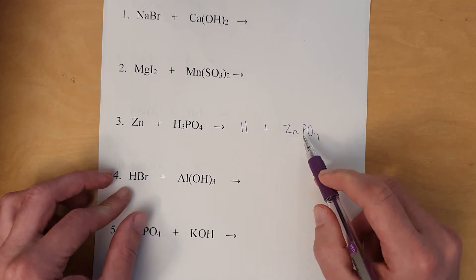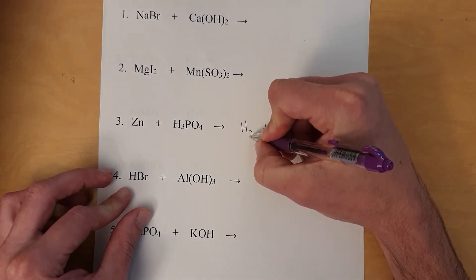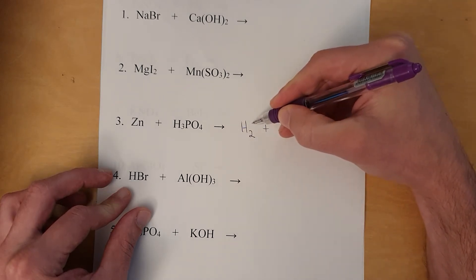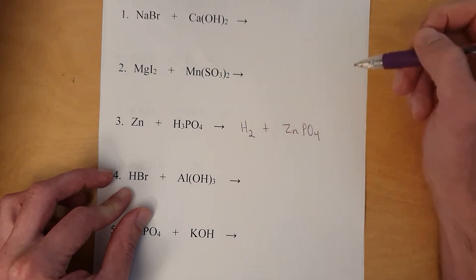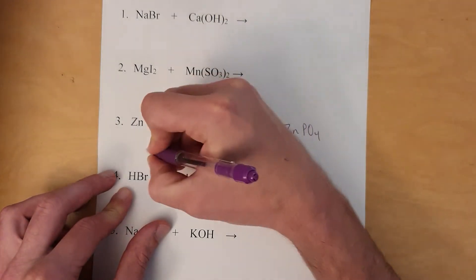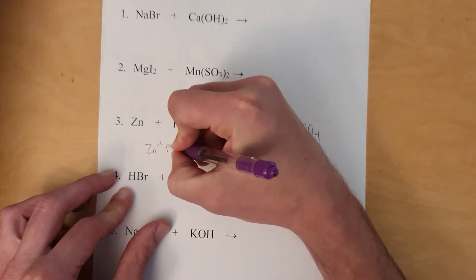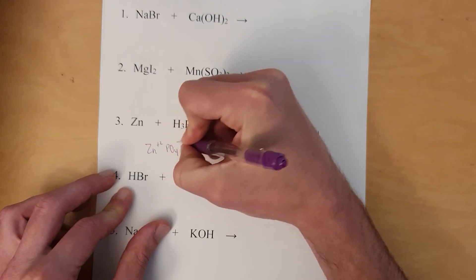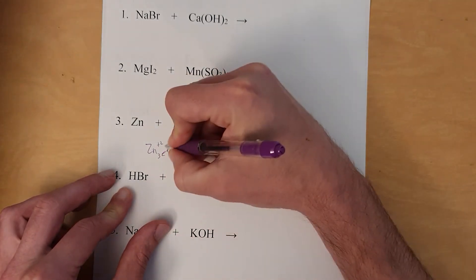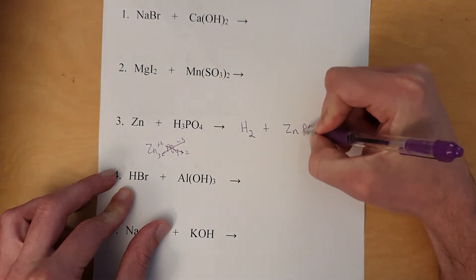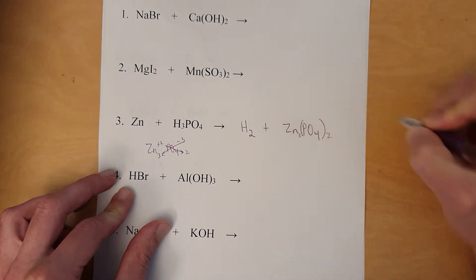Next, we need to fix the formulas. Hydrogen, when it's a pure element, is H₂ because it's a diatomic element. As for zinc, we have to keep in mind that zinc is a +2 charge and phosphate is a −3 charge. So if you put the two together, you've got three zincs and two phosphates. So the correct formula has two phosphates and three zincs.